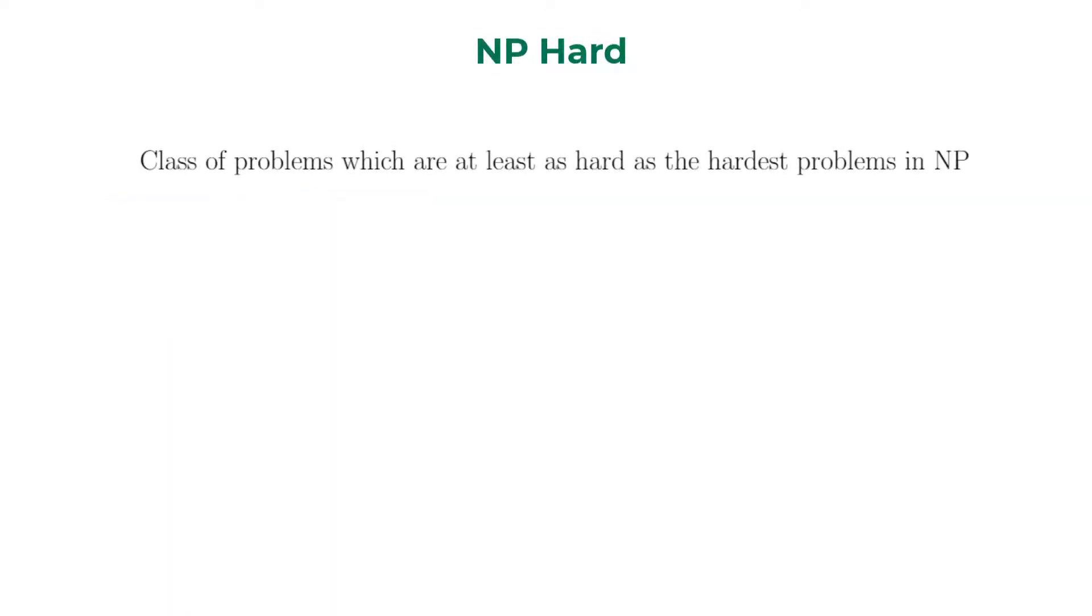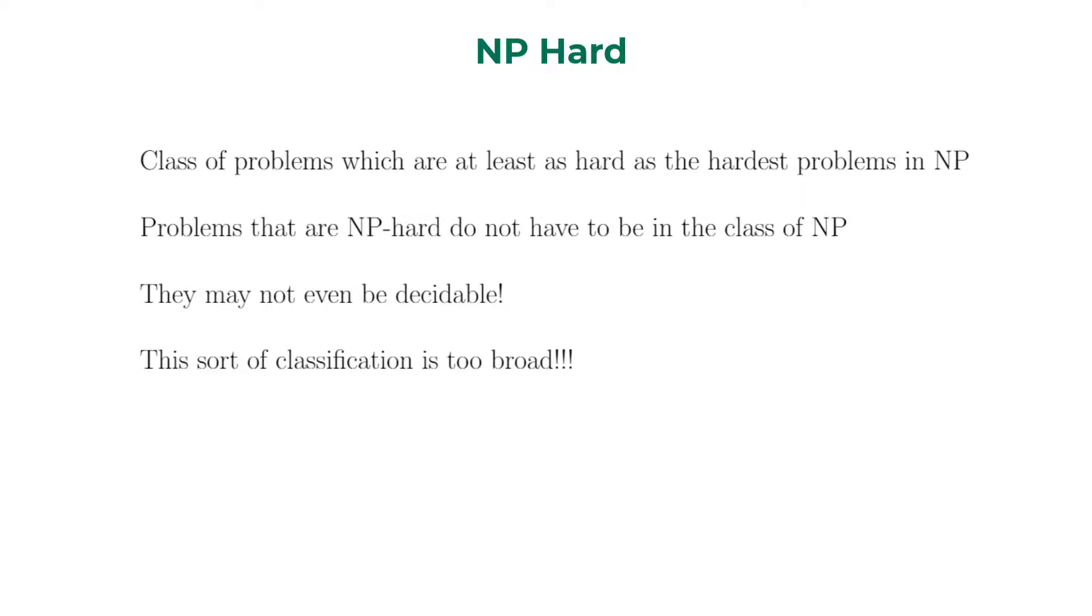Now all the problems that are intrinsically harder than those that can be solved by a non-deterministic Turing machine in polynomial time are classified to be in the class NP hard. These are the problems that can never be in the class of P. But this sort of classification is too broad as it contains problems that do not even have polynomial time verifiers and also can contain problems that are not even decidable.